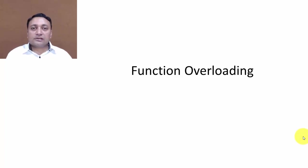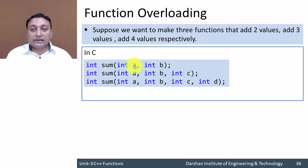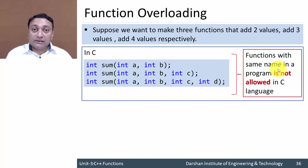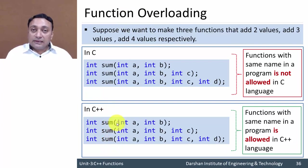In this lecture we are going to discuss function overloading. Suppose we want to make three functions that add two values, three values, and four values respectively. Functions with the same name in a single program in C language is not allowed — it will confuse the compiler about which function to call. But in C++, functions with the same name are allowed using function overloading, because though they have the same name, they all have different argument lists.